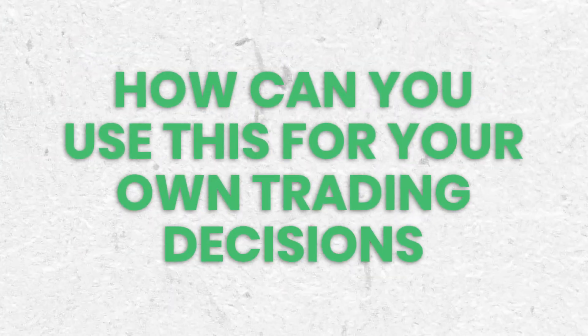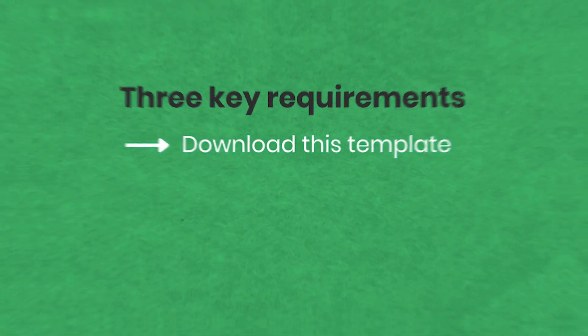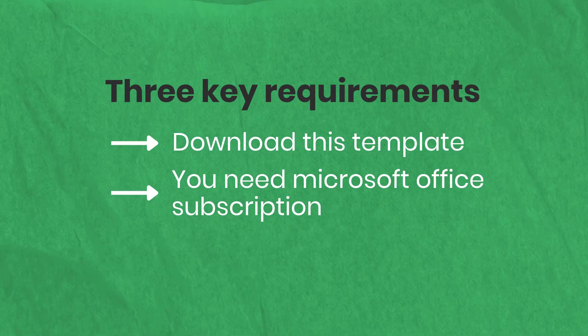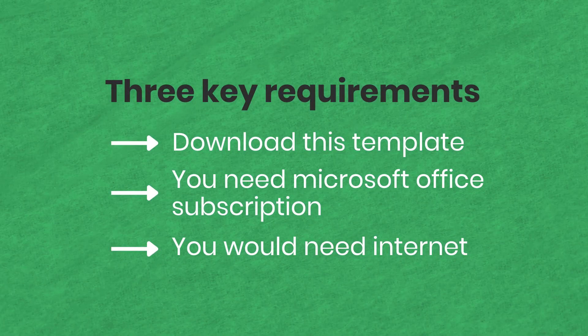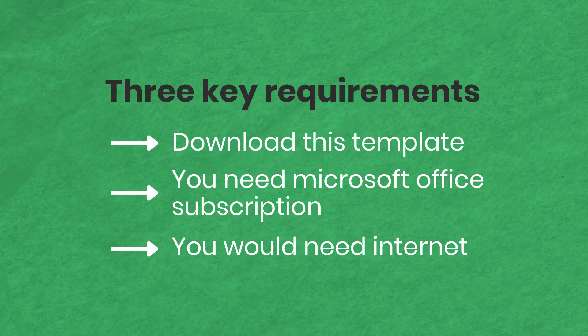There are three key requirements to use this template. First, you need this template, which you can download from inzara.com. Second, you need a Microsoft Office subscription, because the historical stock data comes from the Microsoft service. Third, you need an internet connection to pull that data. In most cases you may already have a Microsoft Office subscription, so the only extra cost is the one-time fee to download the template.